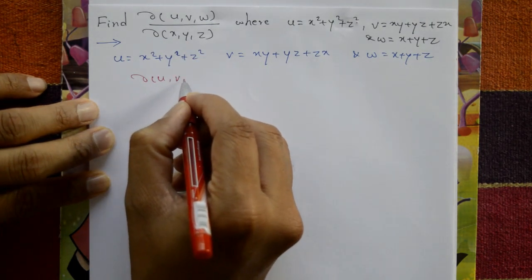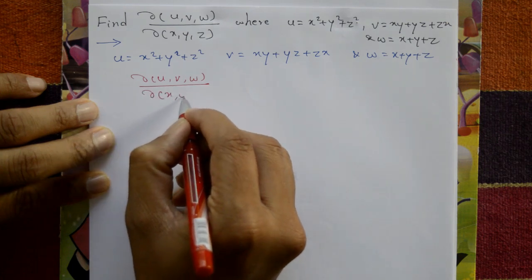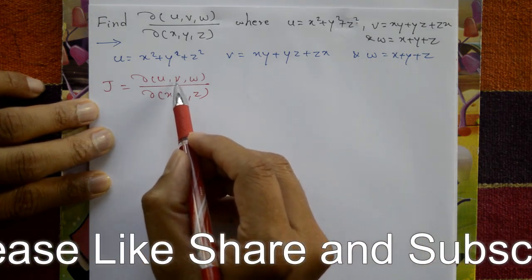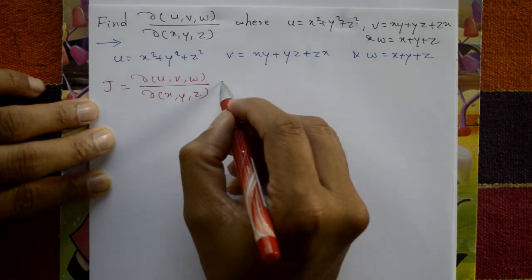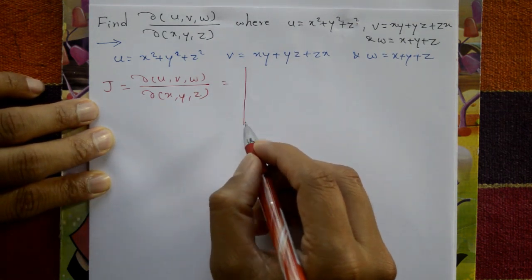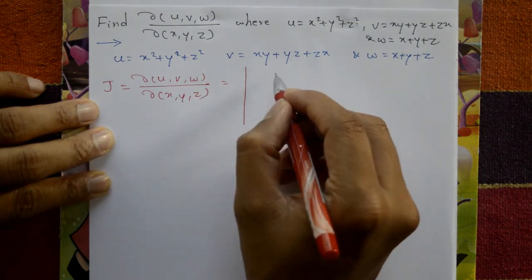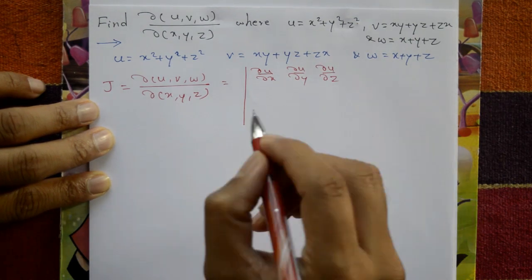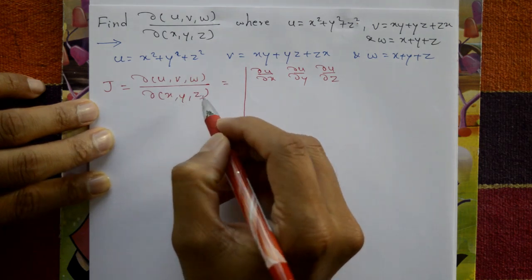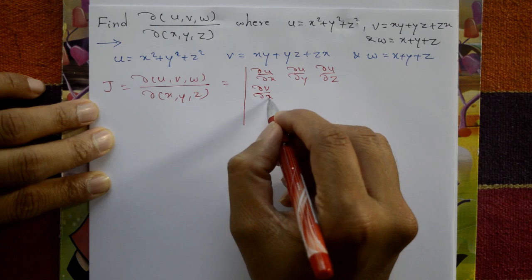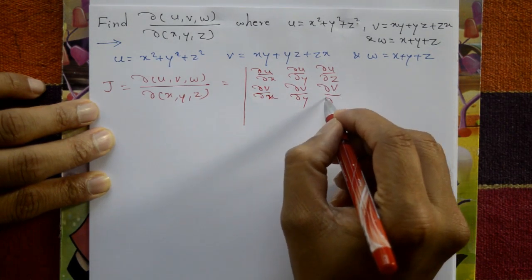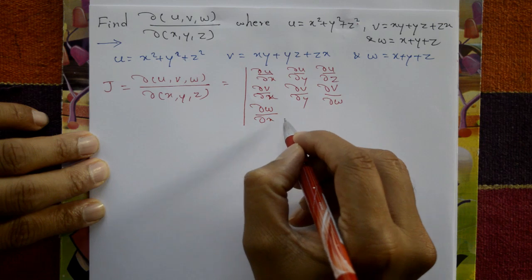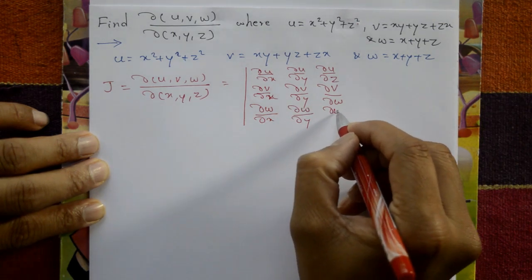We find ∂(u,v,w)/∂(x,y,z), that is the Jacobian. Differentiate u, v, w with respect to x, y, z partially. It is a determinant — first row: ∂u/∂x, ∂u/∂y, ∂u/∂z; second row: ∂v/∂x, ∂v/∂y, ∂v/∂z; third row: ∂w/∂x, ∂w/∂y, ∂w/∂z.